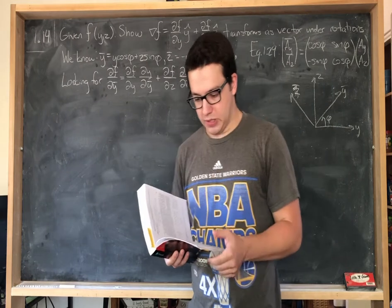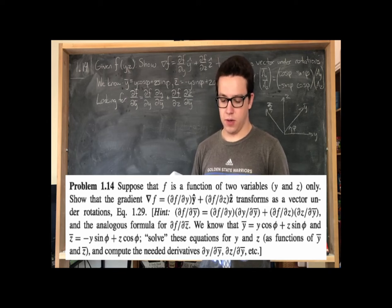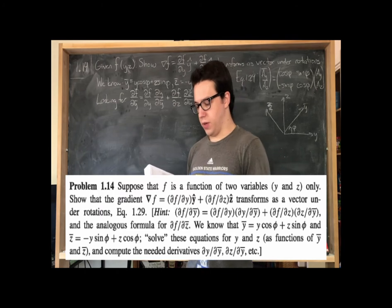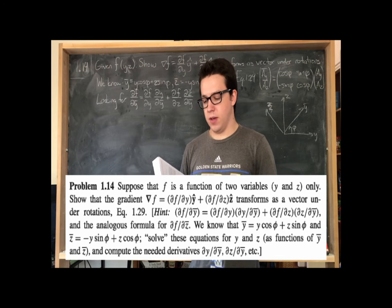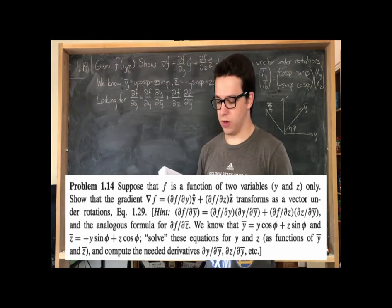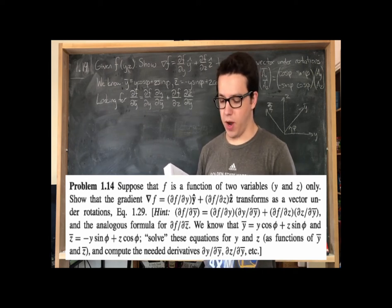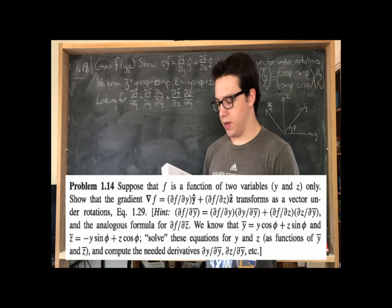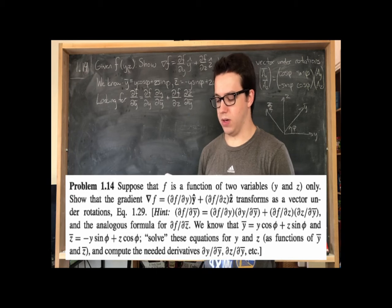This problem says: suppose that f is a function of two variables, y and z only. Show that the gradient del f equals (df/dy) y-hat plus (df/dz) z-hat transforms as a vector under rotations — equation 1.29. The hint given is that df/dy_bar equals (df/dy)(dy/dy_bar) plus (df/dz)(dz/dy_bar), and analogously for df/dz_bar, knowing what the y_bar and z_bar components are.